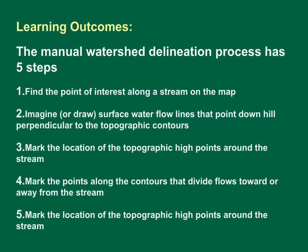The five steps are: 1. Find the point of interest along a stream on the map. 2. Imagine or draw surface water flow lines that point downhill perpendicular to the topographic contours. 3. Mark the location of topographic high points around the stream. 4. Mark the points along the contours that divide flows towards or away from the stream. 5. Connect the dots to delineate the watershed.